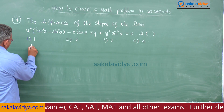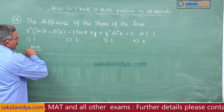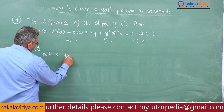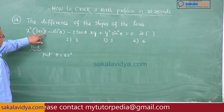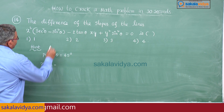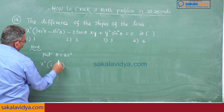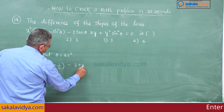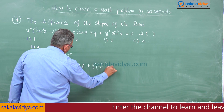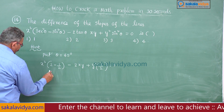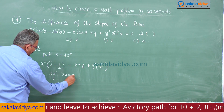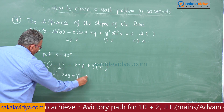Hint: since options are independent of theta, put theta = 45 degrees. Substituting: sec 45 = √2, so sec²45 = 2; sin 45 = 1/√2, so sin²45 = 1/2. We get x²(2 - 1/2) - 2xy + y²(1/2) = 0. Multiplying both sides by 2: 3x² - 4xy + y² = 0.